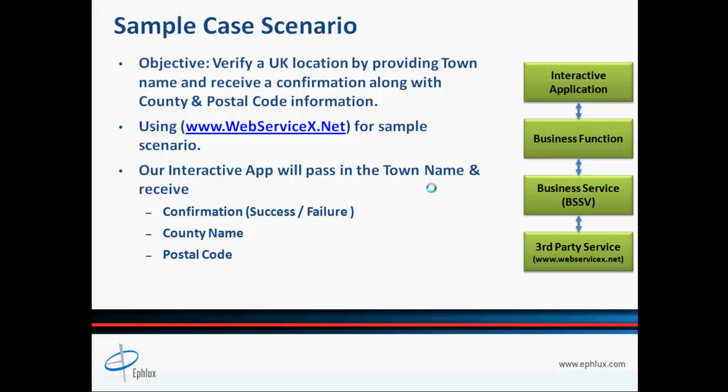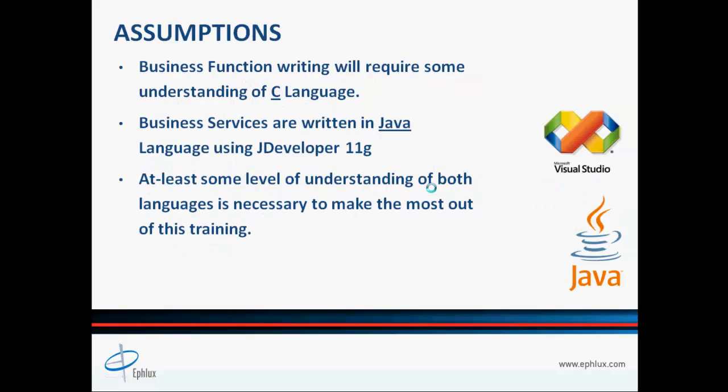Before we start with our hands-on exercise, let's lay down some common assumptions. This hands-on exercise will heavily rely on writing a business function in C language along with a business service in Java. Therefore, knowledge of both C and Java is necessary to make the most out of this exercise. If you don't have experience with C and Java, I recommend taking a course in both languages. Although detailed explanation is provided along the way for each code segment, knowledge of both C and Java is undeniably necessary.